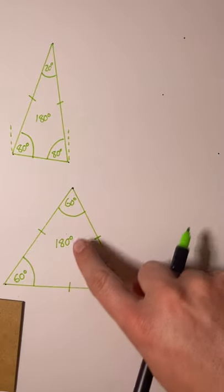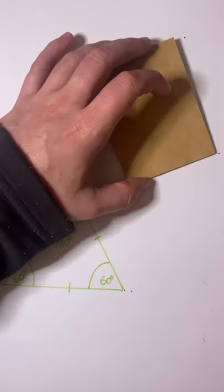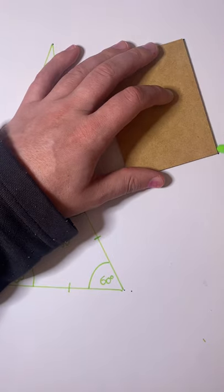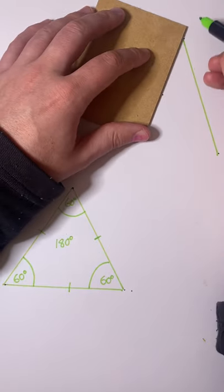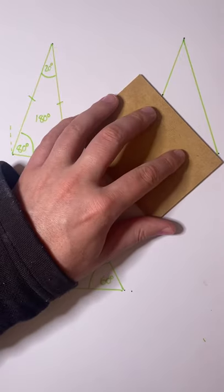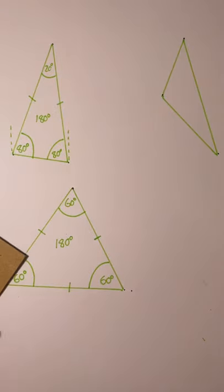So we have our equilateral triangle, isosceles triangle. And lastly, we have our scalene triangle. Now the scalene triangle has every single side different. The length is different for every single side. And then we have it there. So every single side is different, therefore every angle is different.